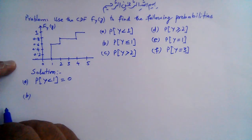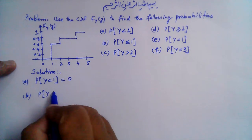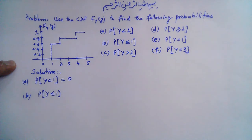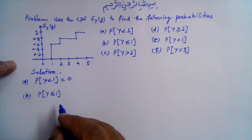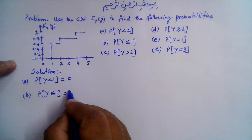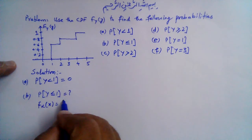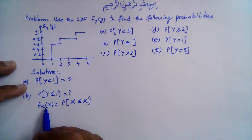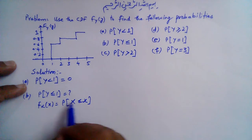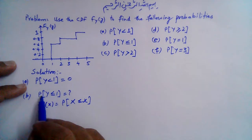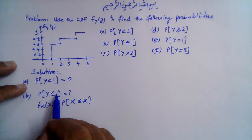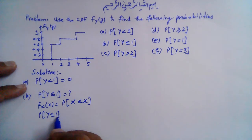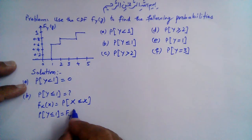Part b: probability that Y is less than or equal to 1. We know that the CDF of a discrete random variable is defined as F_X(x) = P[X ≤ x]. So the value of the CDF function at x is defined as this probability. It means that we can find this probability by finding the value of this CDF at 1.